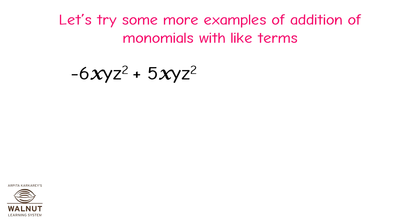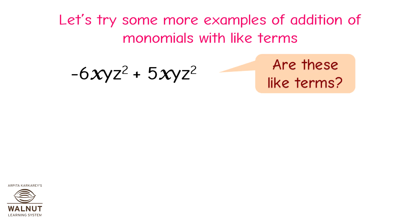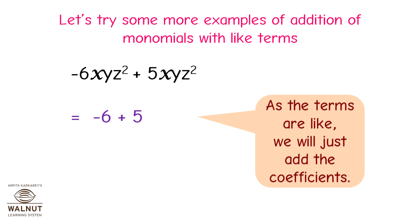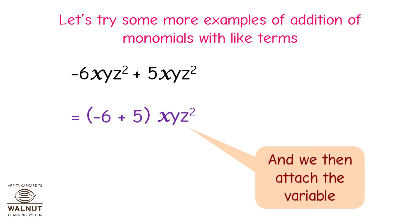-6xyz² + 5xyz²: are these like terms? Yes. So that equals -6 + 5. As the terms are like, we add the coefficients and attach the variable. The answer is -1xyz².